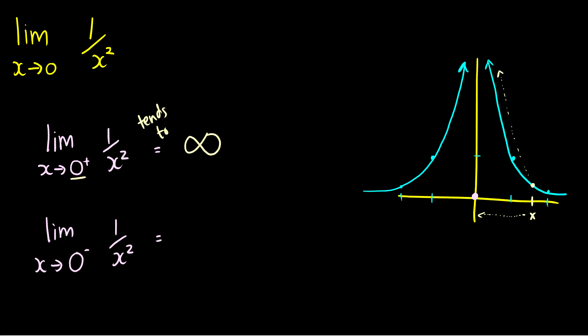What about x going to 0 from the left? Let's take a point x on the left and move it closer and closer towards 0. The same thing happens — as it moves up the curve it gets higher and higher and tends to infinity as well. Because the left-hand limit and the right-hand limit both tend to the same value, the limit as x approaches 0 of 1 over x squared also tends to infinity.